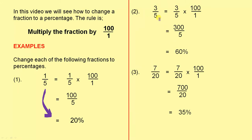Three over five is three over five times a hundred over one. Three times one hundred is three hundred. Five divided into three hundred goes sixty. So the answer is sixty percent. So three over five equals sixty percent.